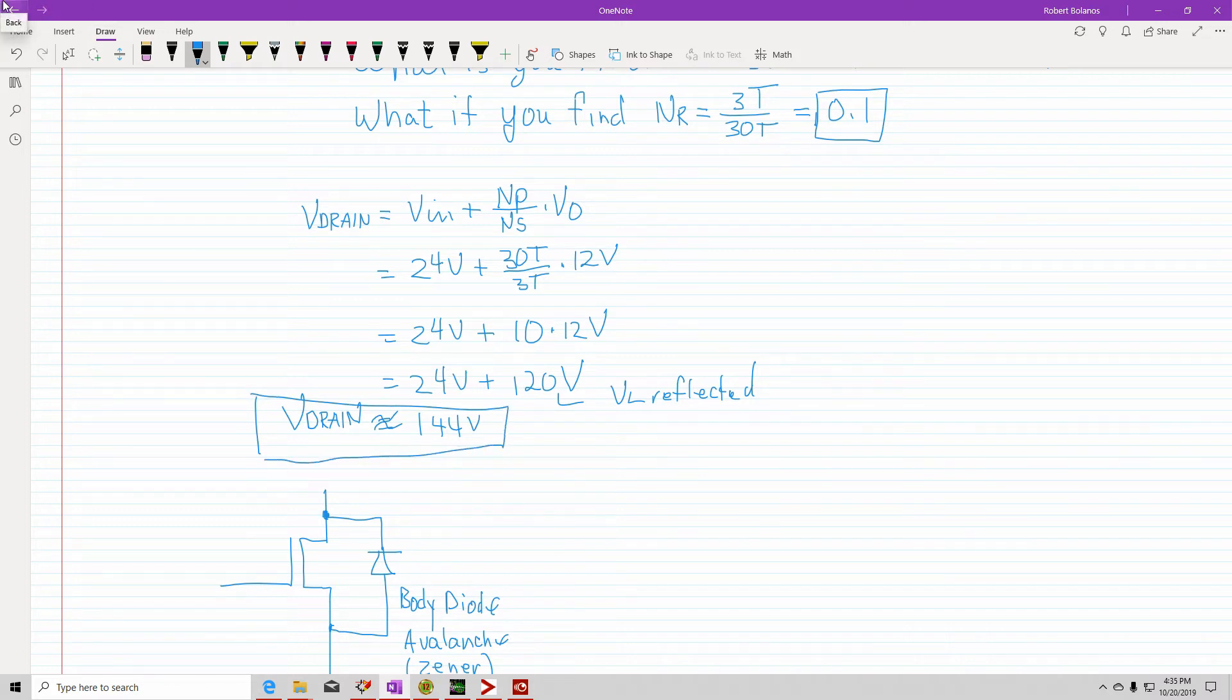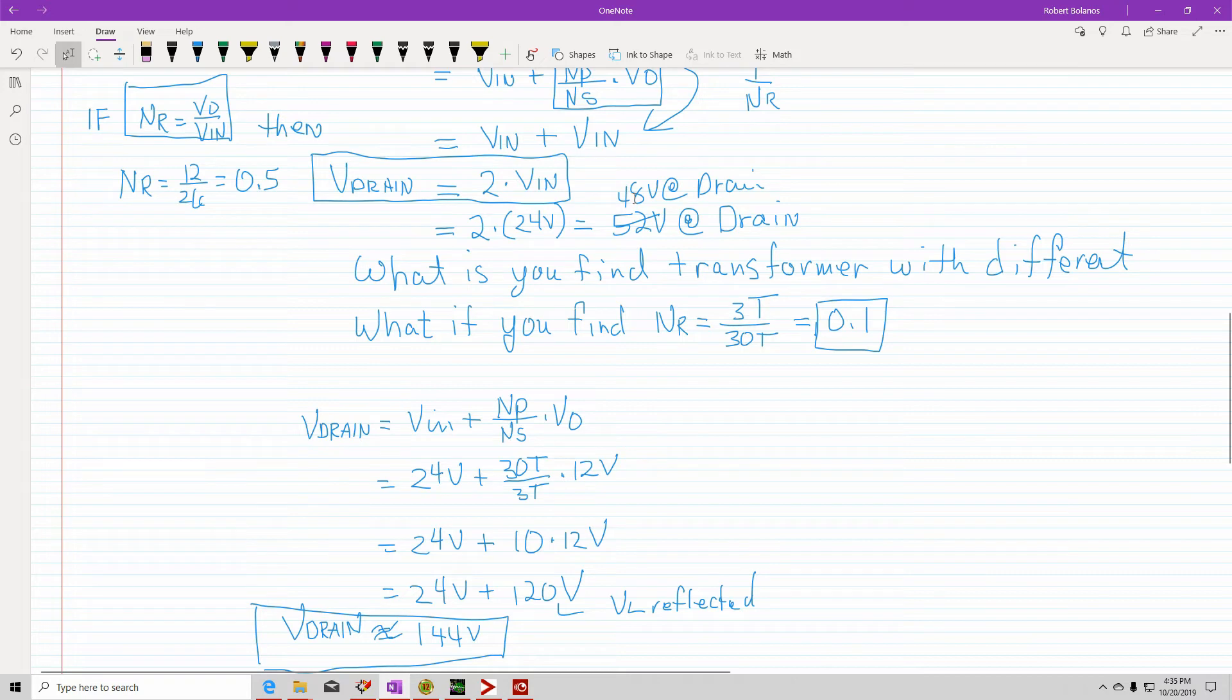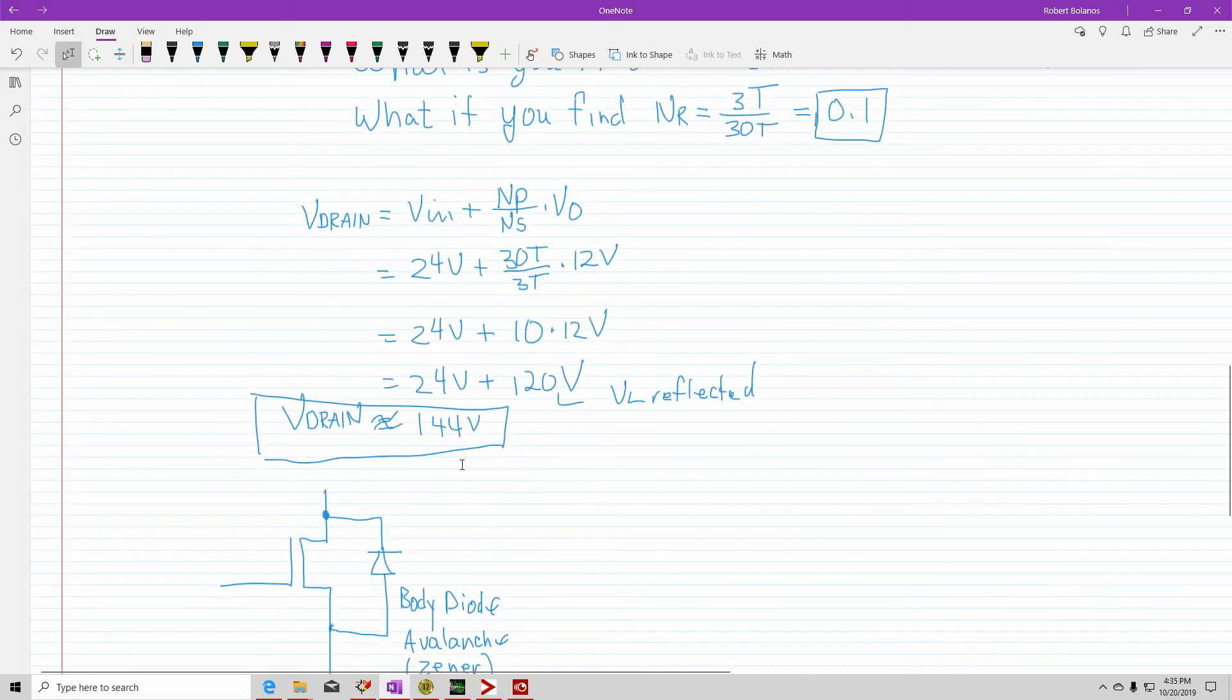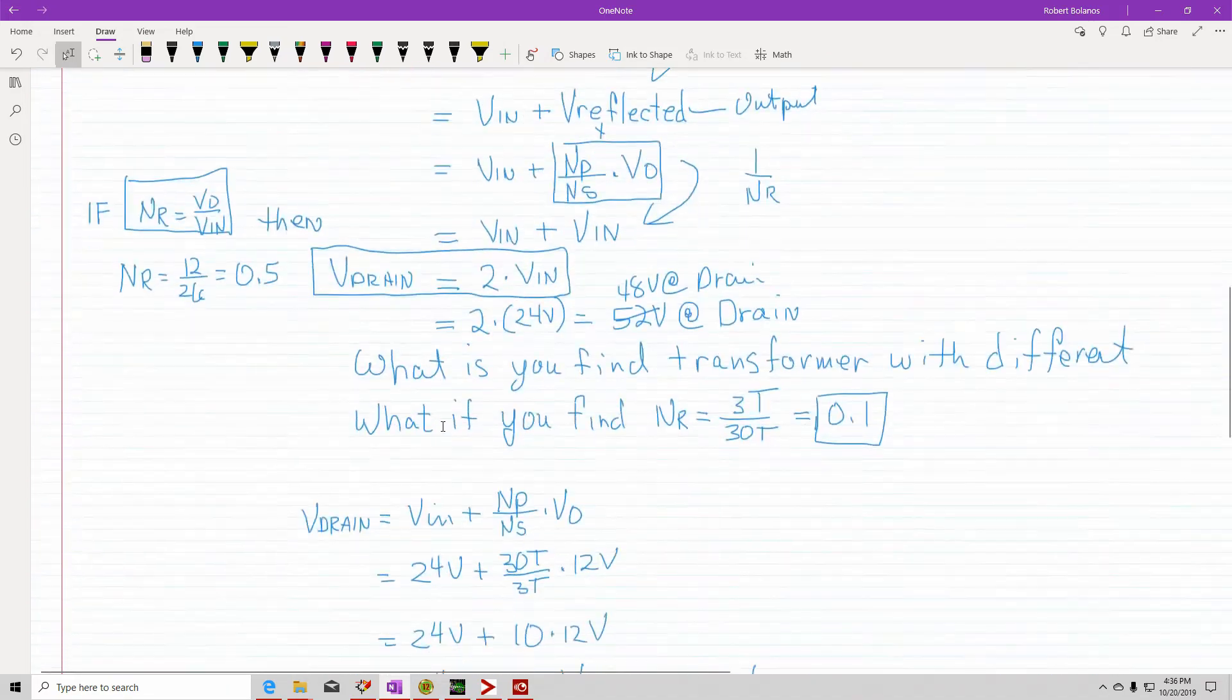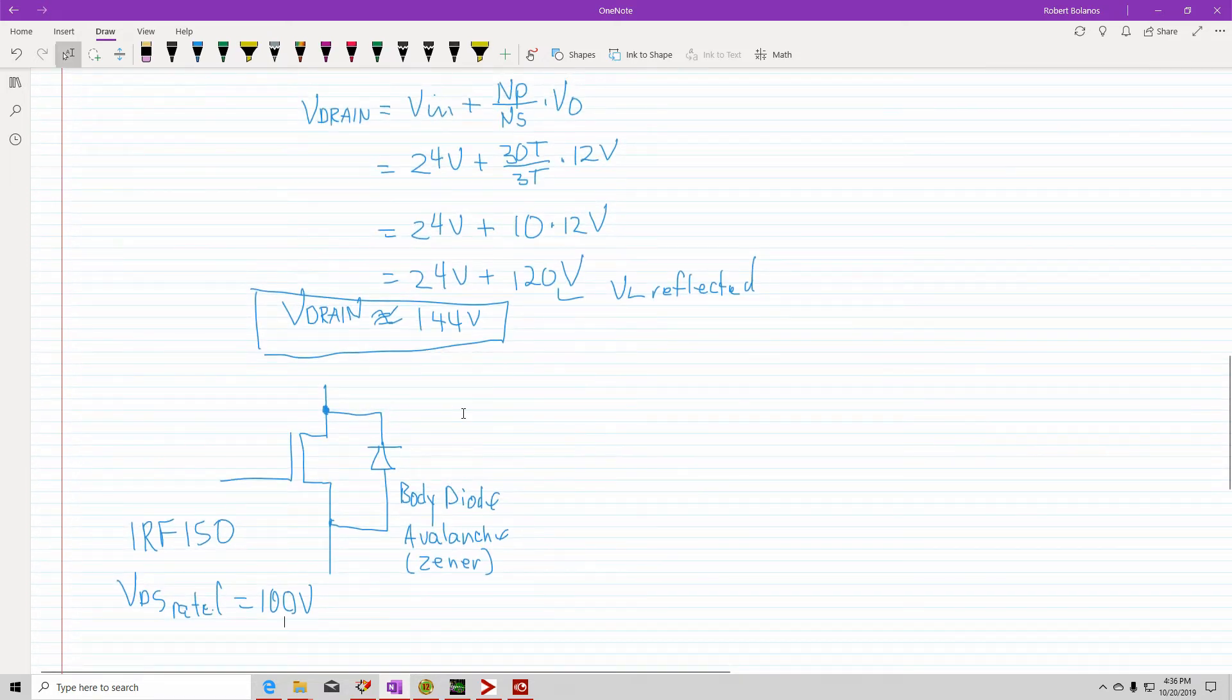So that means before with the turn ratio of 0.5, you have 48. But now with a ratio of 0.1, you have 144. That's a huge difference. So what's going to happen? Well, let's say if you use an IRF 150 as a VDS rated 100 volts. Obviously it exceeds the rating. And in fact, because it exceeds the rating,